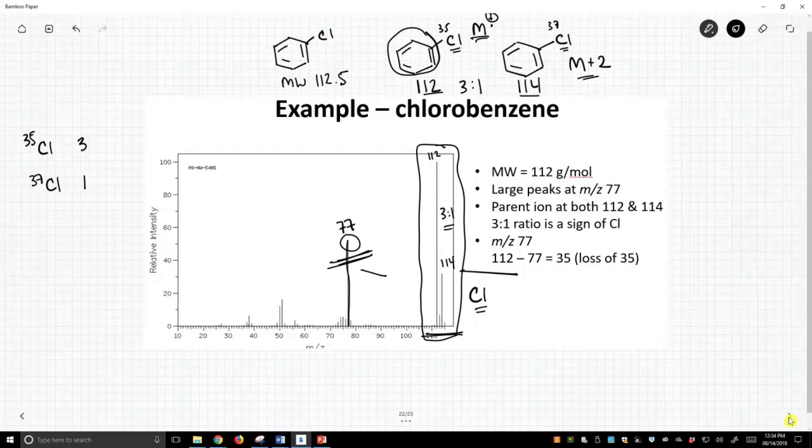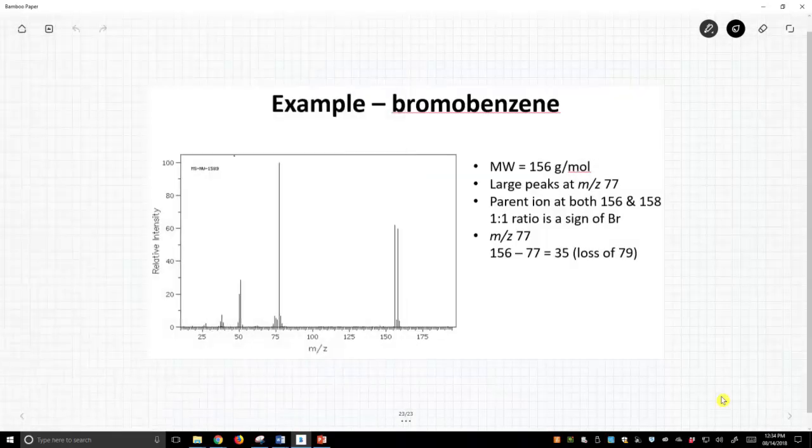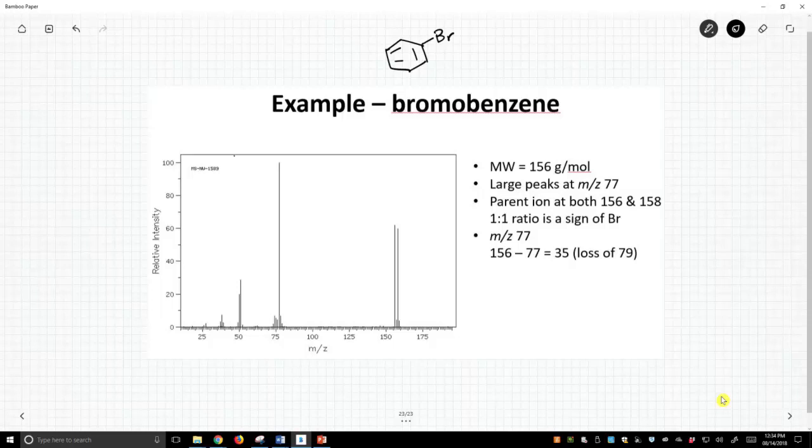The next slide is really the exact same structure except for it's bromobenzene. What's different about bromobenzene? Bromobenzene, a molecule contains bromine that either has a mass of 79 or 81.